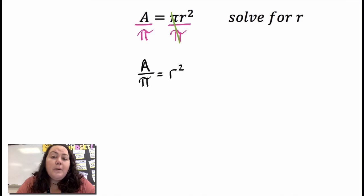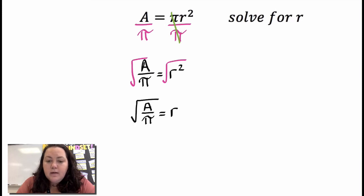I want r by itself, I don't want r squared. So to undo a square, I would take the square root. So I square root both sides and I get r equals the square root of a over pi. And that's all I can do.